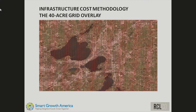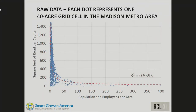For roads and water and sewer, we took the entire Madison metropolitan area and divided it into 40-acre grids. In each grid we totaled up the number of people and employees from census data, and also totaled the length of roads in each grid cell. On the vertical axis, you have square feet of road per capita; on the horizontal axis, population and employees per acre. The basic relationship shows that as density increases, road area per capita tends to decrease — and at very low densities, it increases dramatically.